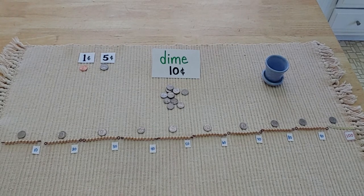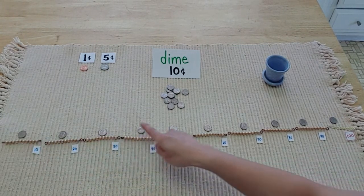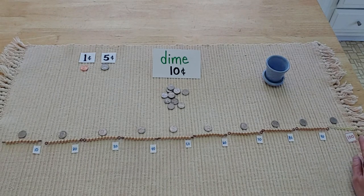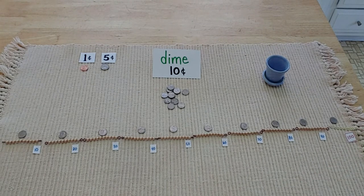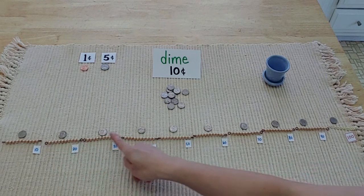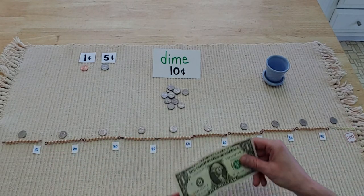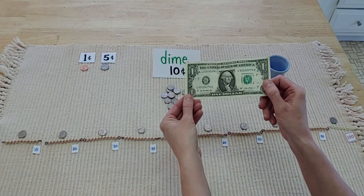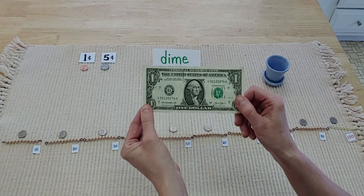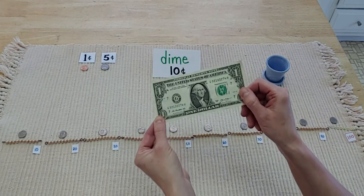Just a little something extra I want to show you: if you get to 100, you can make a fancy exchange. Ten dimes is the same as one whole dollar. So one dollar is like 100 cents, it's just in paper instead of coins.